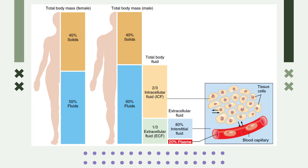For women, water is about 55% of body weight; for men, about 60%. Men require more water than women. The reason can be summarized in three points: first, men have higher energy expenditure; second, less body fat compared to females; and lastly, males have greater muscle mass. These are the reasons why males have a higher water requirement than females.